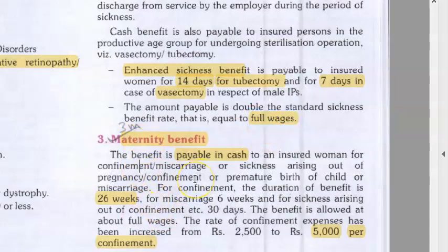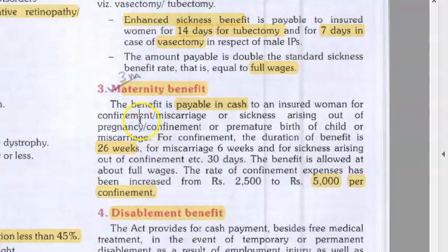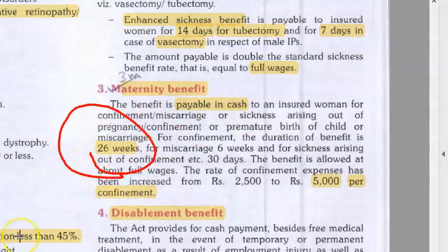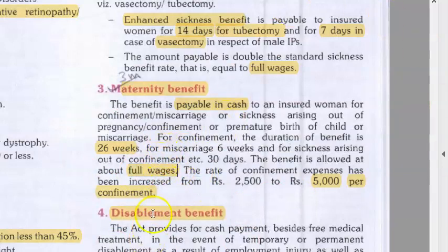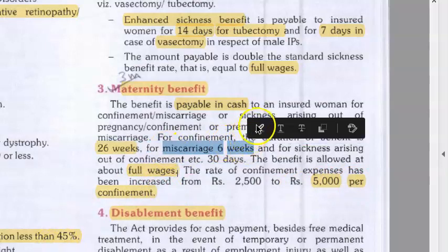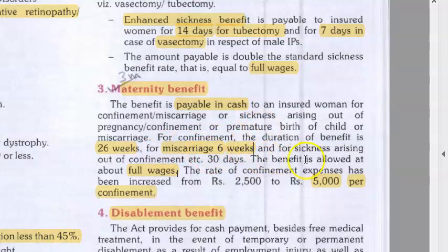After sickness benefit, we move to maternity benefit, which is payable in cash — like maternity leave — for 26 weeks, which is 6.5 months. The benefit is at full wages. There is also ₹5,000 per confinement. In case of miscarriage, they get 6 weeks, which is 1.5 months.